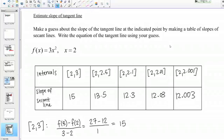I've got 15, 13.5, 12.3, 12.03, 12.003. To me, it looks like this is approaching 12. I can imagine that if I made my interval a little smaller that I might be even closer to 12. I can't know for sure, of course, but that's why this is just a guess at this point. I'm going to guess that the slope of the tangent line is 12.